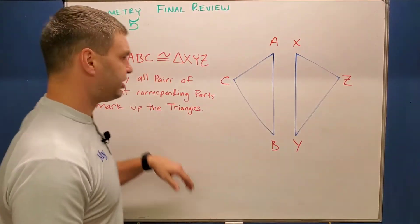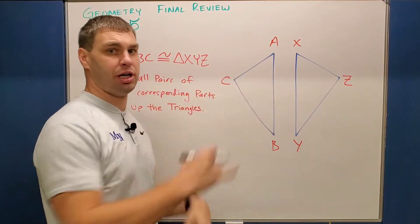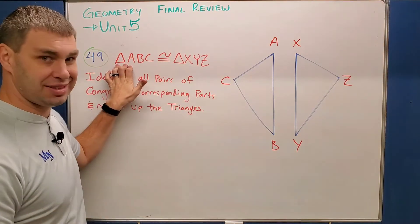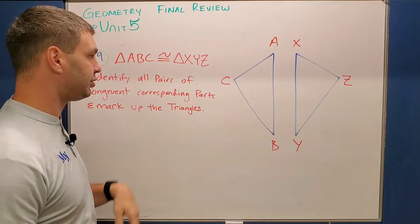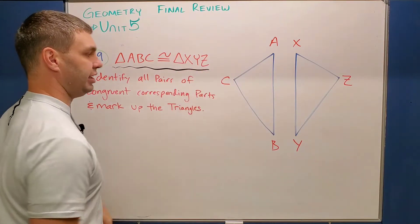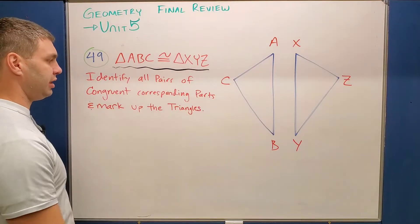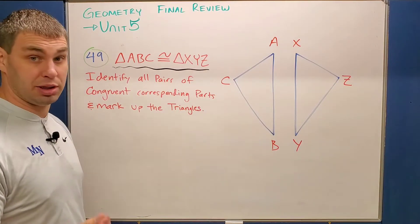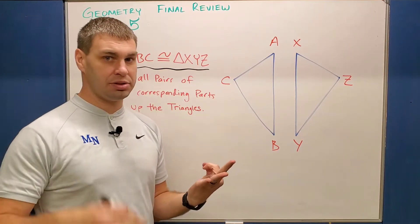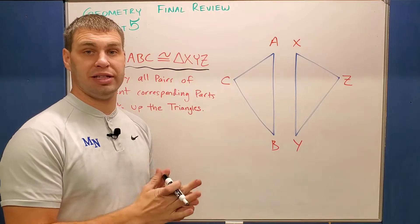If you're one of my students, I'll put the number from the review packet that we're going over. If you're not one of my students, this problem should also help you with triangle congruencies. This first one says triangle ABC is congruent to triangle XYZ. This top part here — the congruent statement — we have to use that to identify all pairs of congruent corresponding parts and also mark up our triangles.